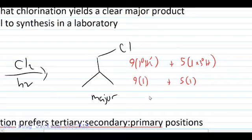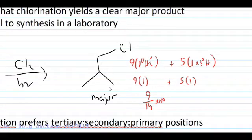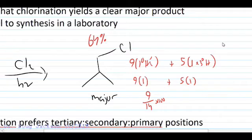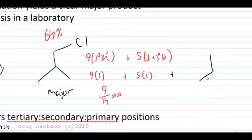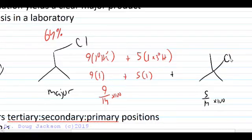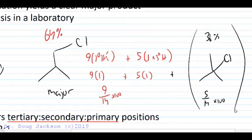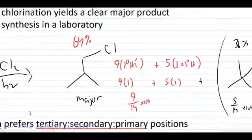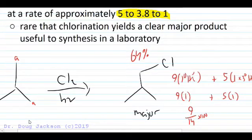Overall, nine out of 14 times 100 gives us the percent of this major product. Nine divided by 14 times 100 gives us 64.3%, so we'll say 64% of the primary substituted halide. The minor product — placing the chlorine in the tertiary position — is five out of 14 times 100, giving the remainder of 36%. So it's still significant, but we do get a true major product here at the less substituted carbon.